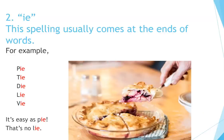Number 2: I-E. This spelling usually comes at the ends of words. For example: pie, tie, die, lie, vie. It's easy as pie. That's no lie.